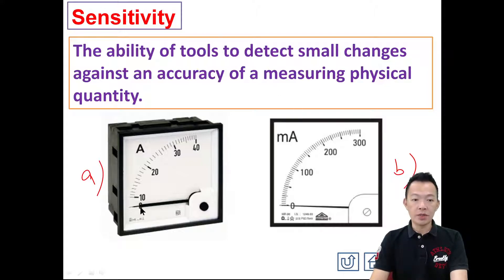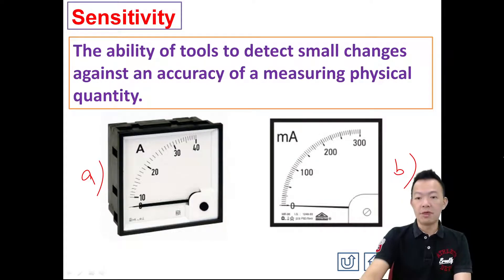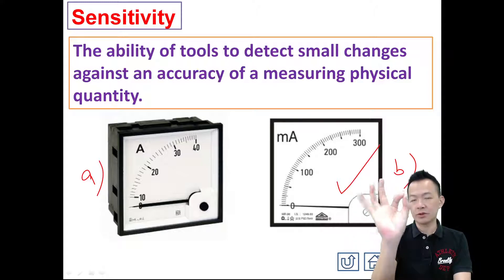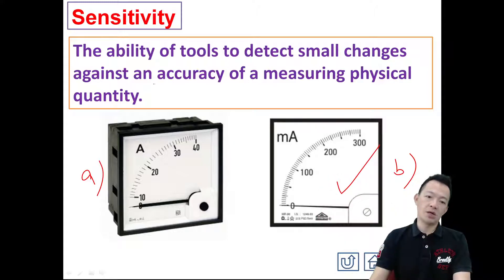Meter A measures in the unit called ampere. But can meter A measure milliampere? Meter B can. So B will be more sensitive — even the small changes of electric current in milliampere, it can detect. So B is more sensitive — small changes, it can accurately measure.